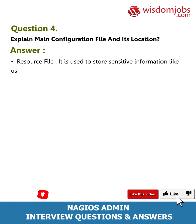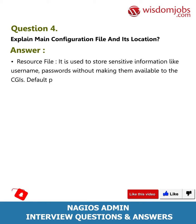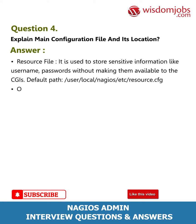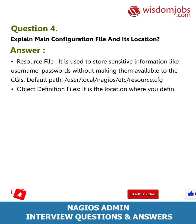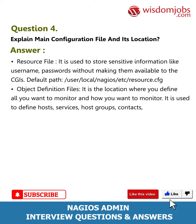Question 4: Explain the main configuration file and its location. Answer: Resource file — it is used to store sensitive information like usernames and passwords without making them available to the CGIs. Default path: /usr/local/nagios/etc/resource.cfg. Object definition files — this is the location where you define all you want to monitor and how you want to monitor it. It is used to define hosts, services, host groups, contacts, contact groups, commands, etc.